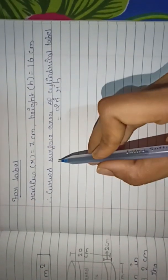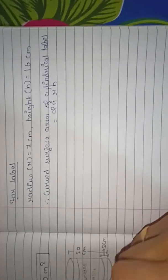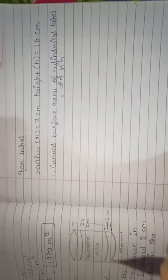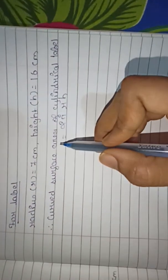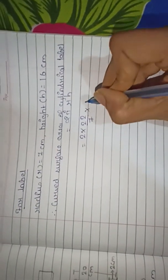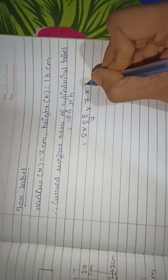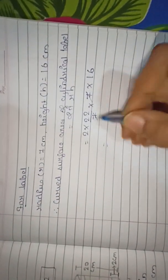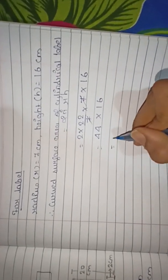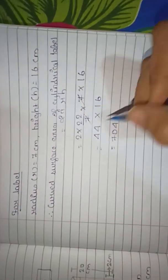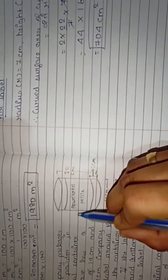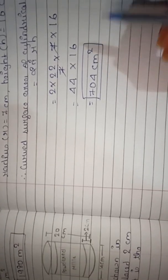We use curved surface area because the label is only on the curved surface, not the top and bottom. So: 2 × (22/7) × 7 × 16. The 7s cancel, giving 2 × 22 × 16 = 44 × 16 = 704 cm². The area of the label is 704 centimeter square.